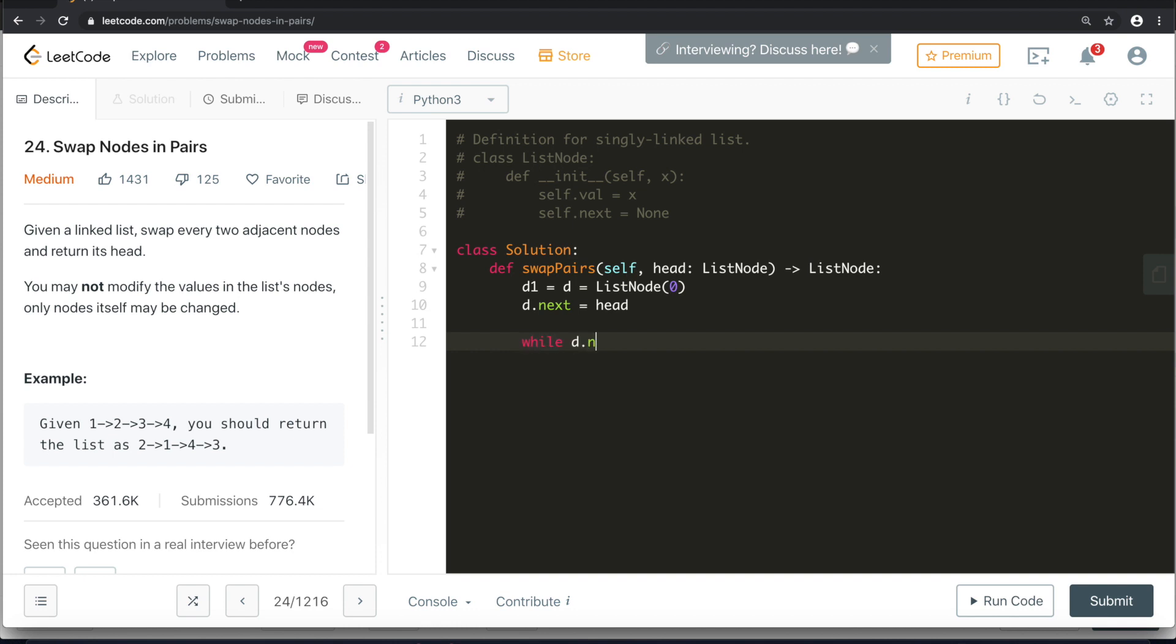because it's a singly linked list, so we don't have anything such as previous. So while d.next and d.next.next is not none, what we want to do? We will simply p equal to d.next and q equal to p.next, or you can say d.next.next.